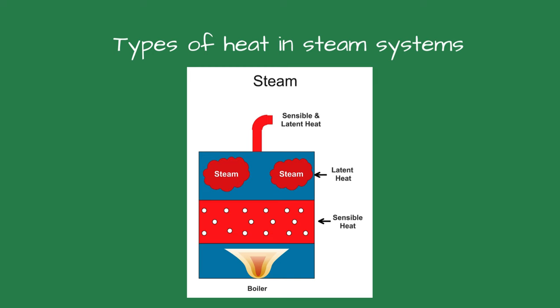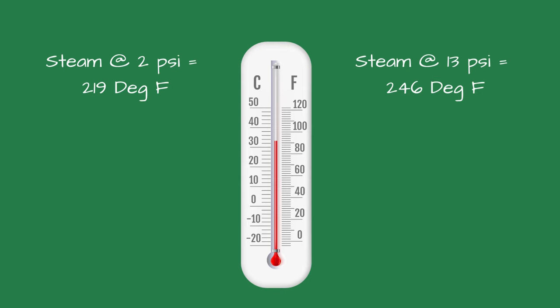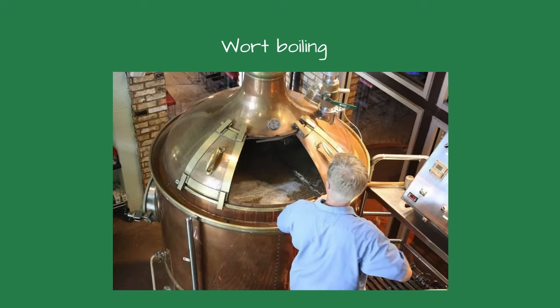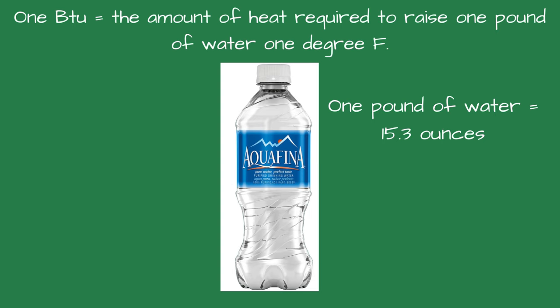Brewers are concerned with steam temperature more than latent heat. The higher the steam temperature, the faster the steam heats the wort. When heating water, it requires 1 BTU to raise 1 pound of water 1 degree. For relevance, 1 pound of water is about 15.3 ounces.